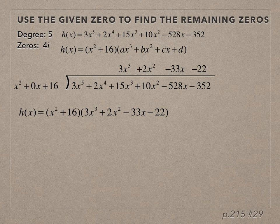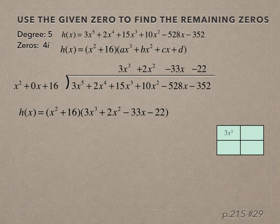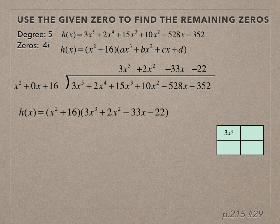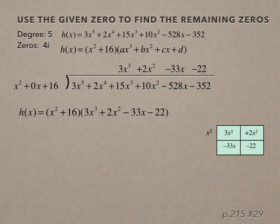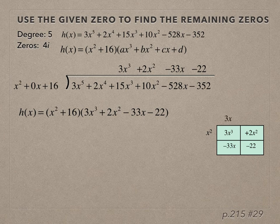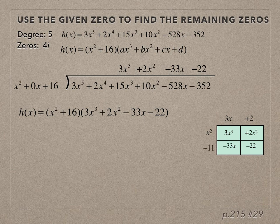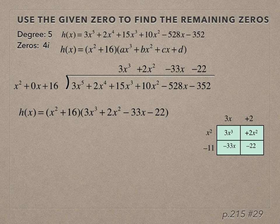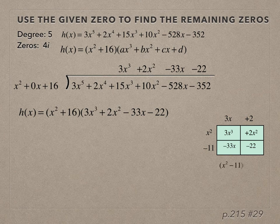Now I want to factor the cubic polynomial using the reverse box strategy. The cubic term and -22 go in opposite corners, the remaining two terms in the middle. Along the top, x² is common. x² times what is 3x³? 3x. x² times what is 2x²? 2. Then 3x times what is -33x? -11. Check: -11 times 2 is -22. The factors are (x² - 11)(3x + 2).